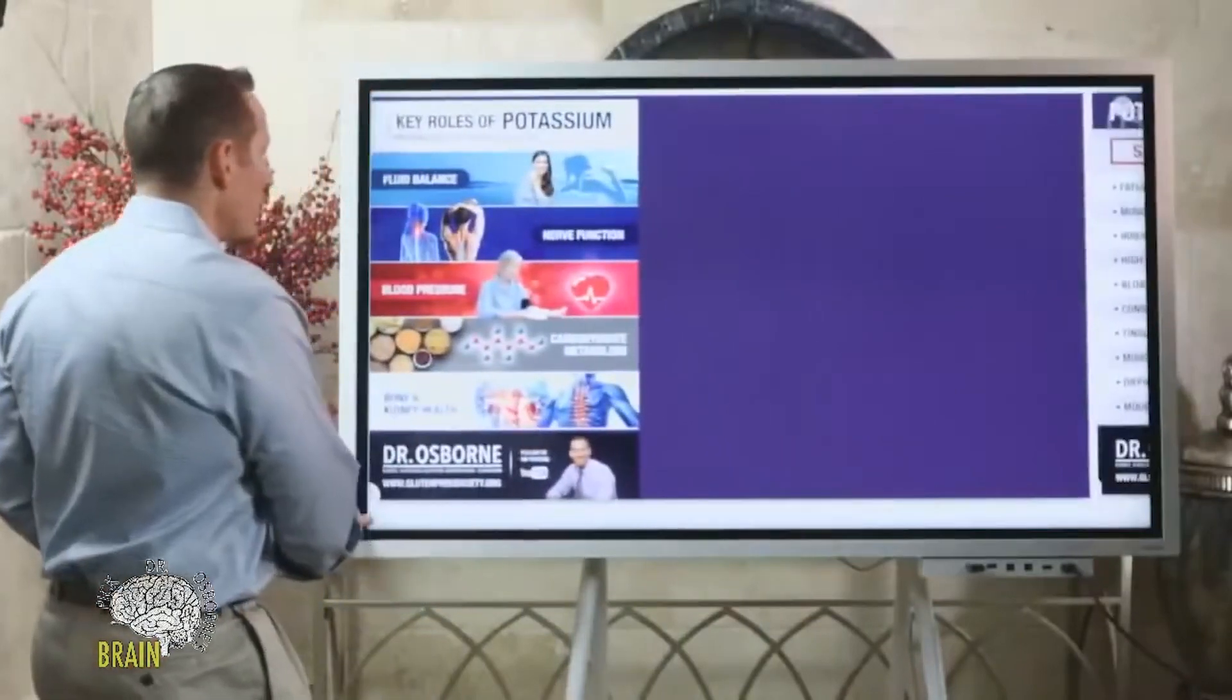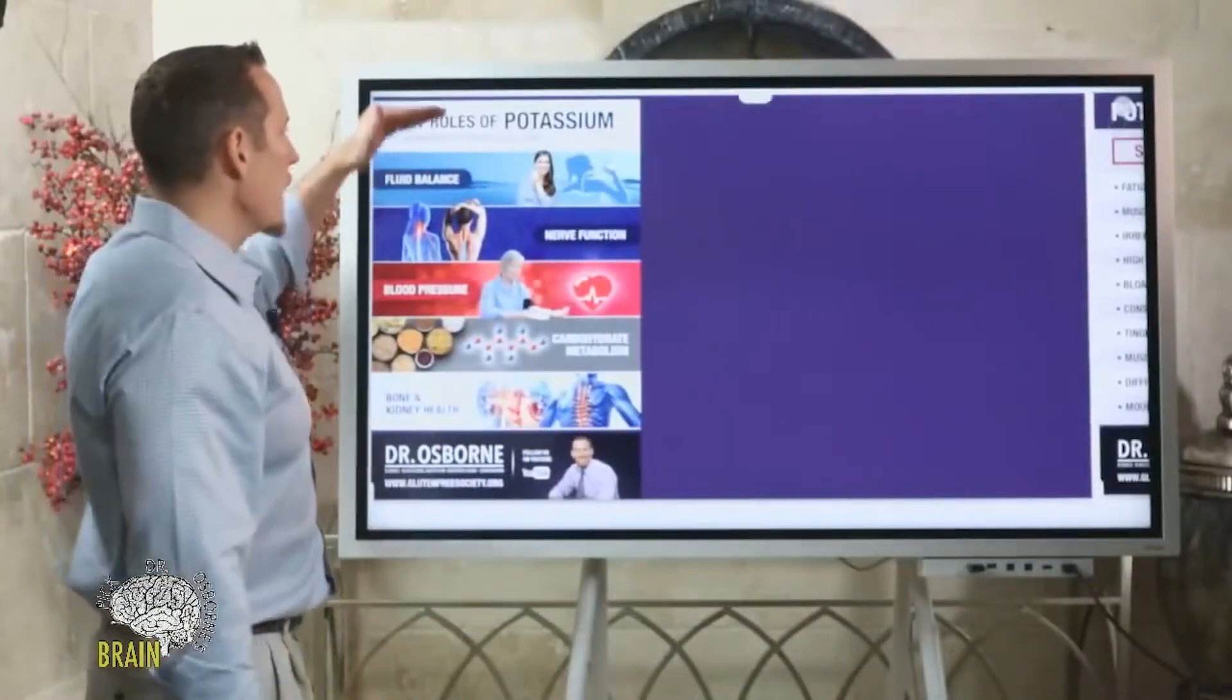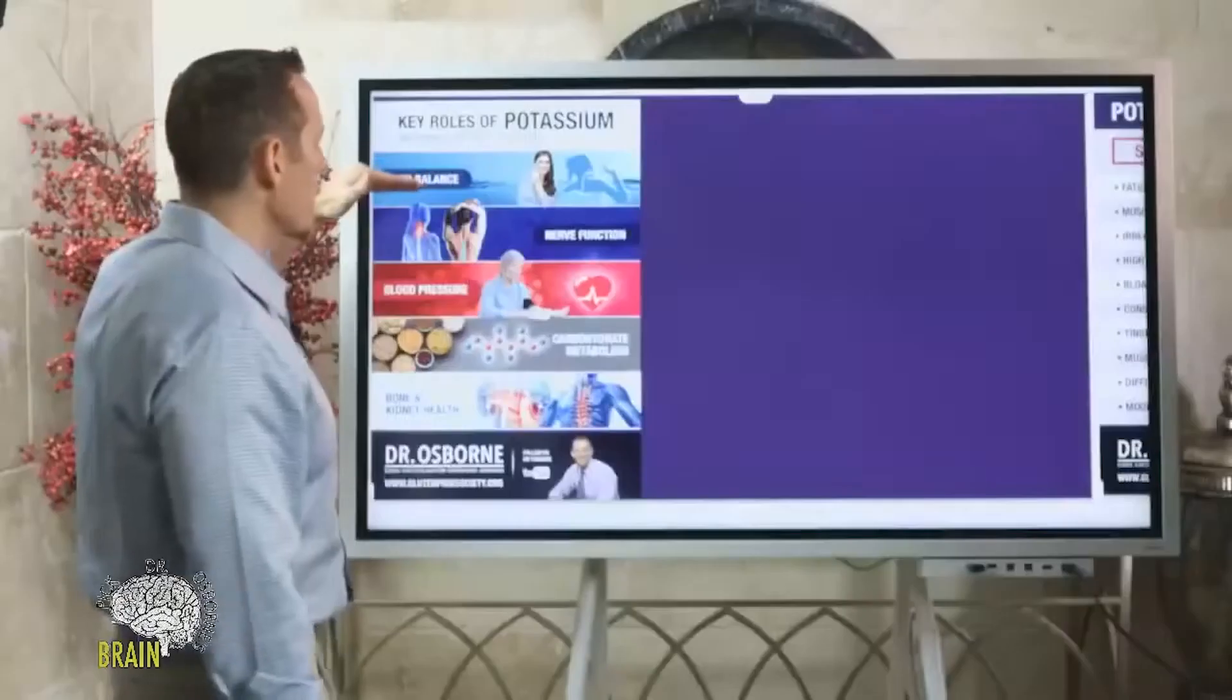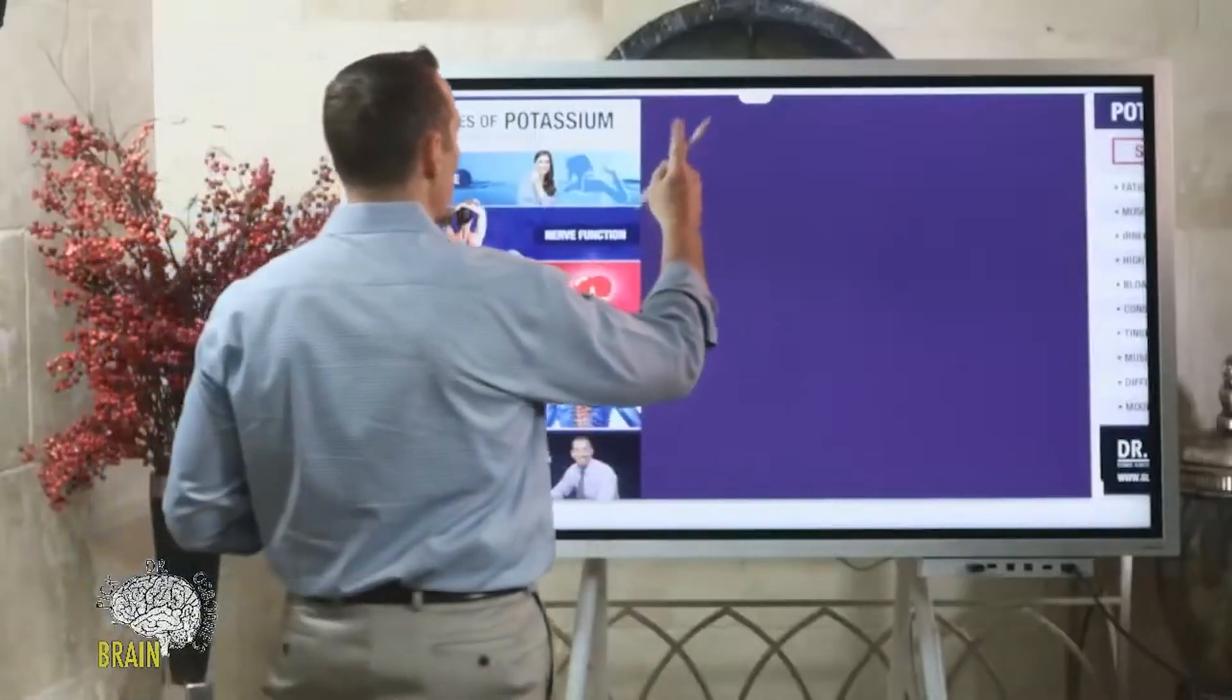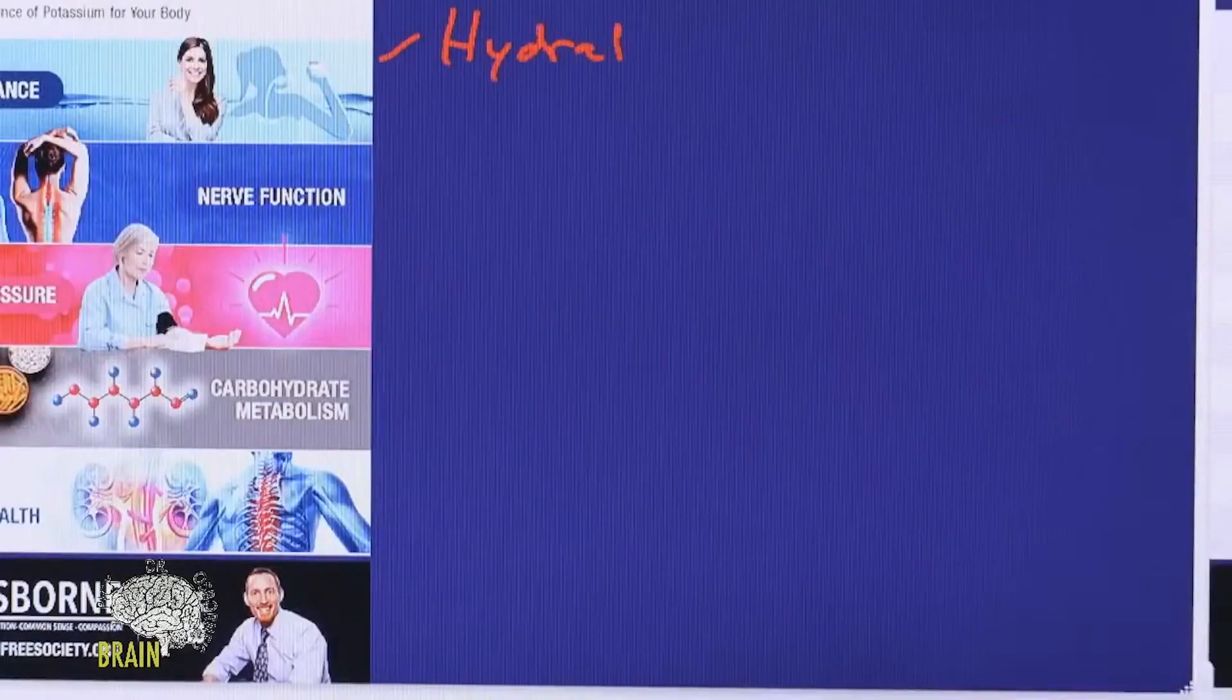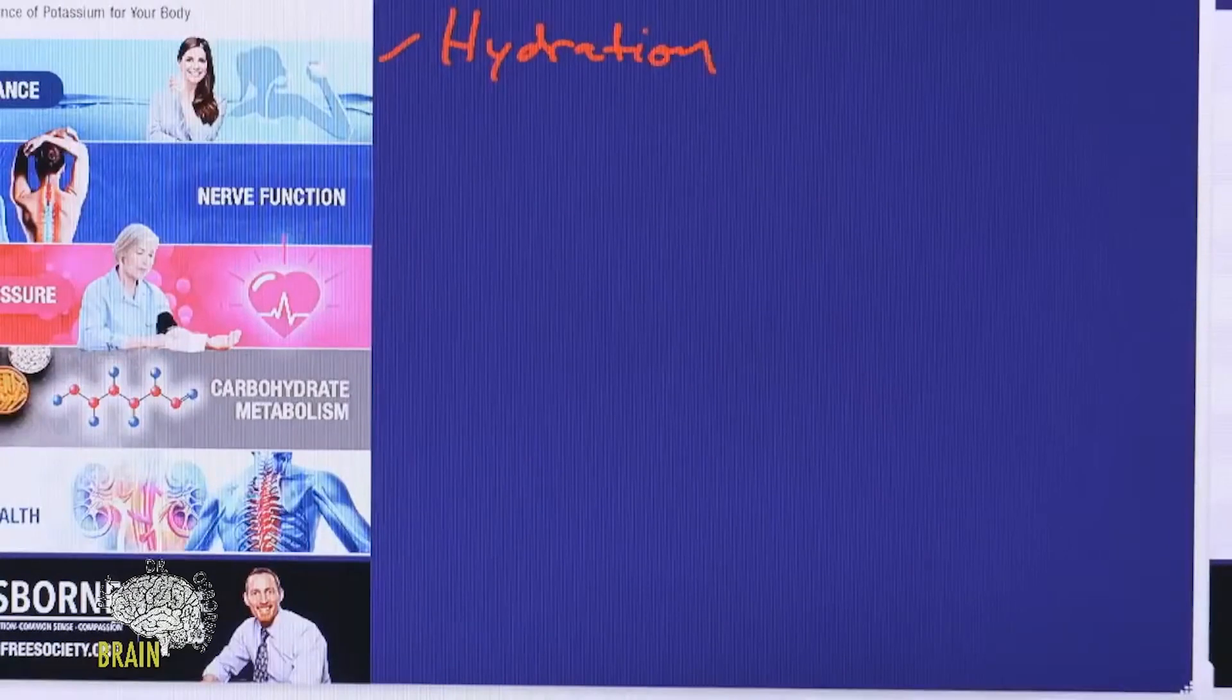Some of the key functions of potassium - it plays a lot of roles, but these are some of the most important. Fluid balance: as an electrolyte, it helps maintain hydration and your fluids. As an electrolyte, it has an effect or pulls an osmotic effect on water, so it can keep you hydrated.